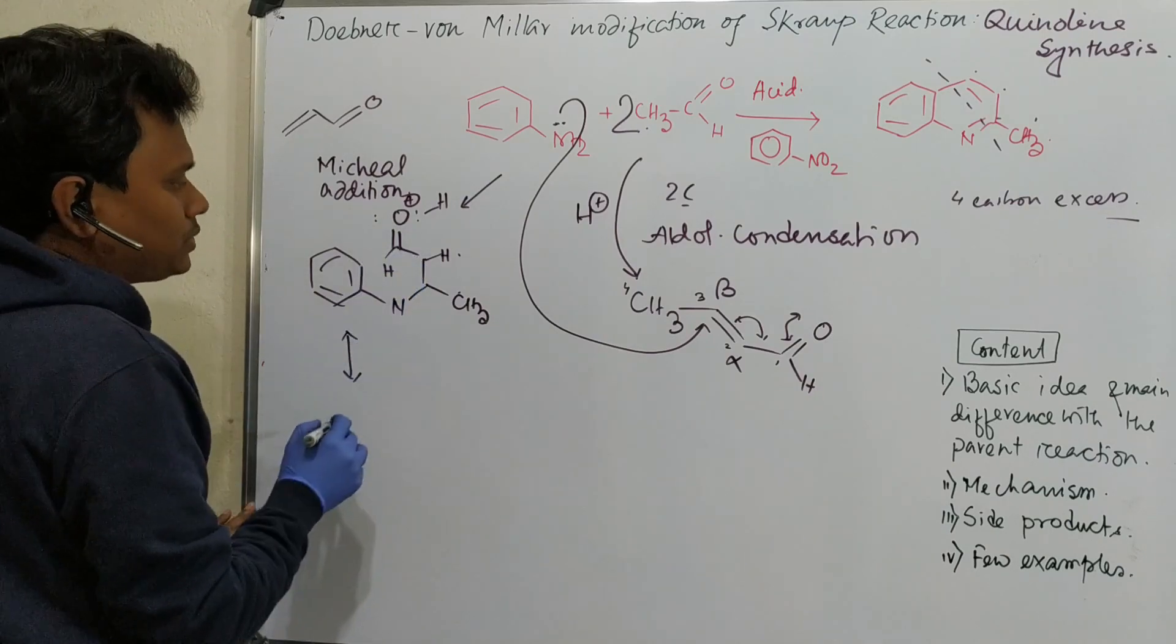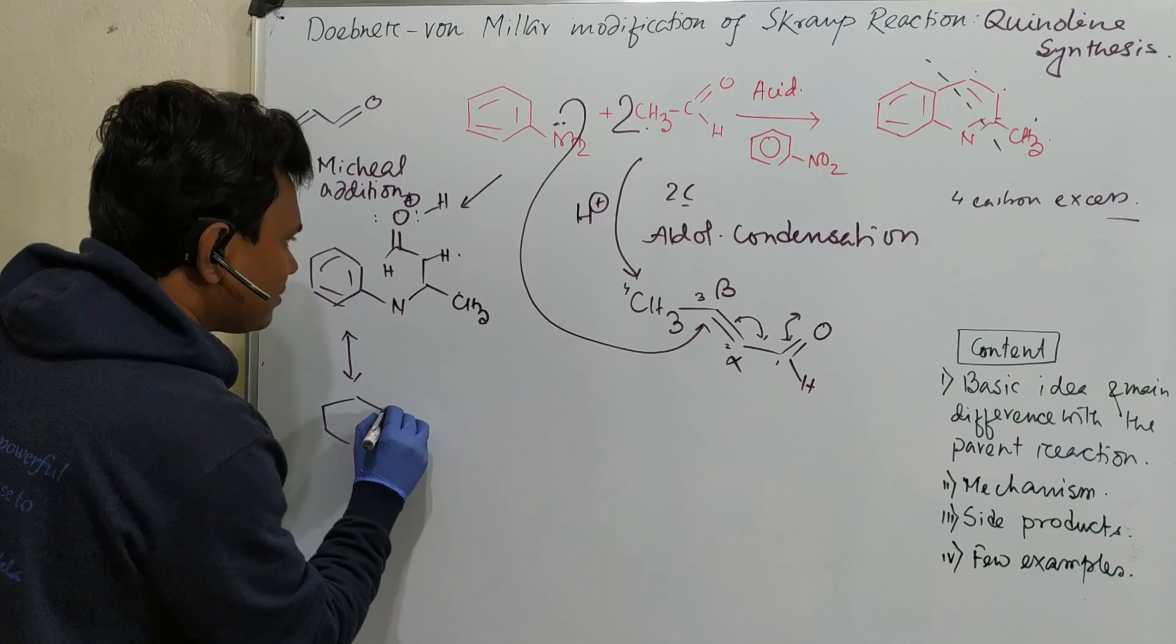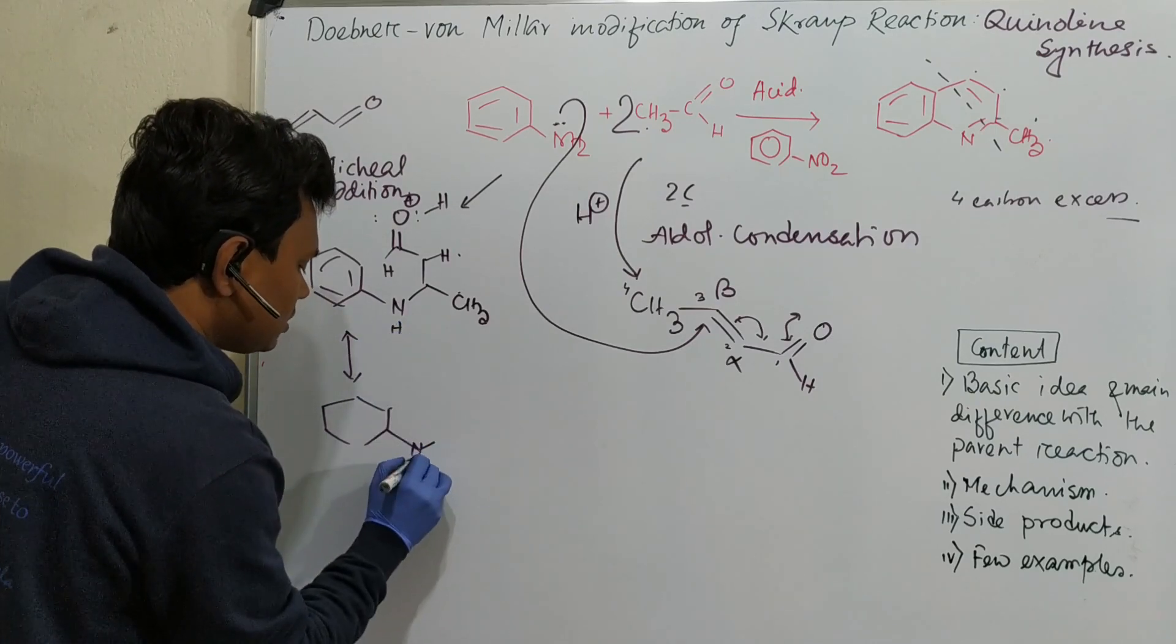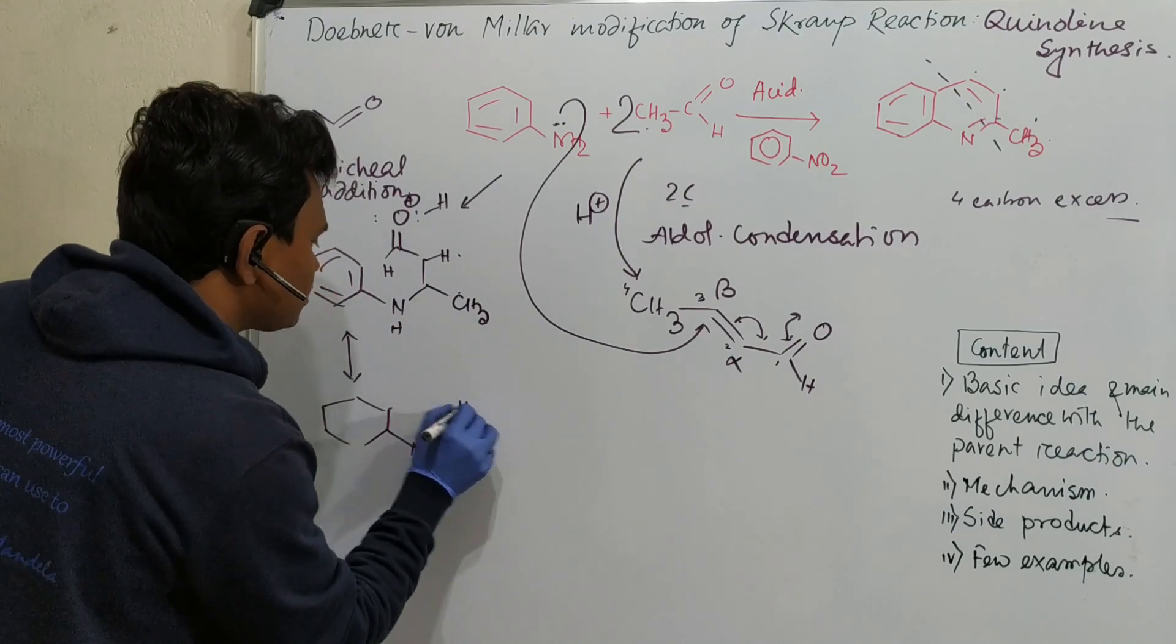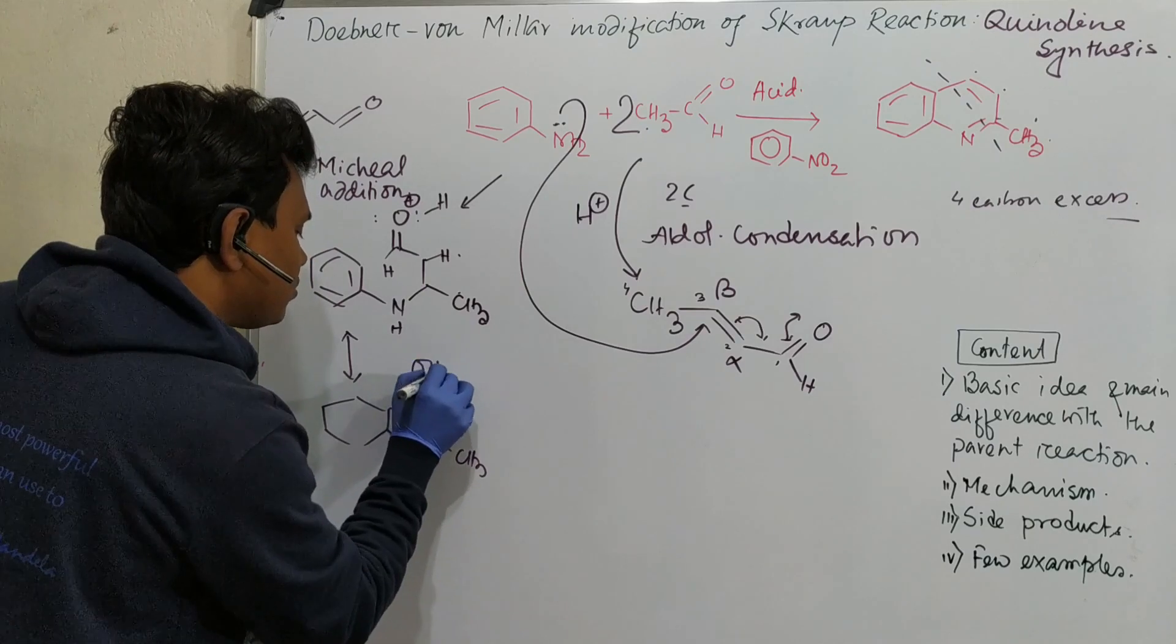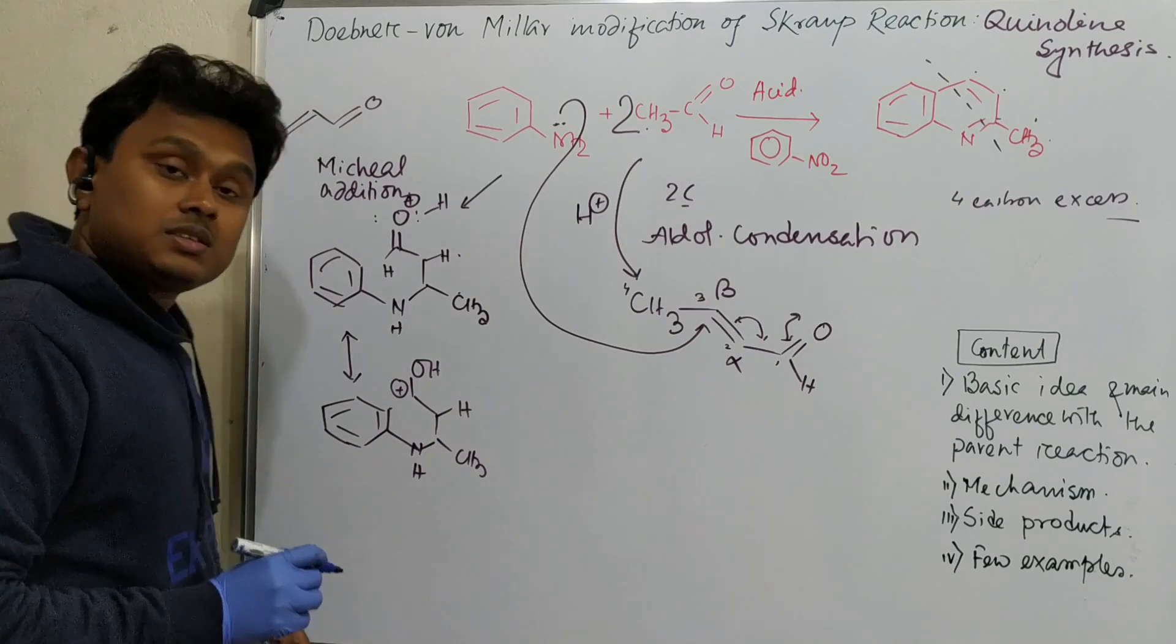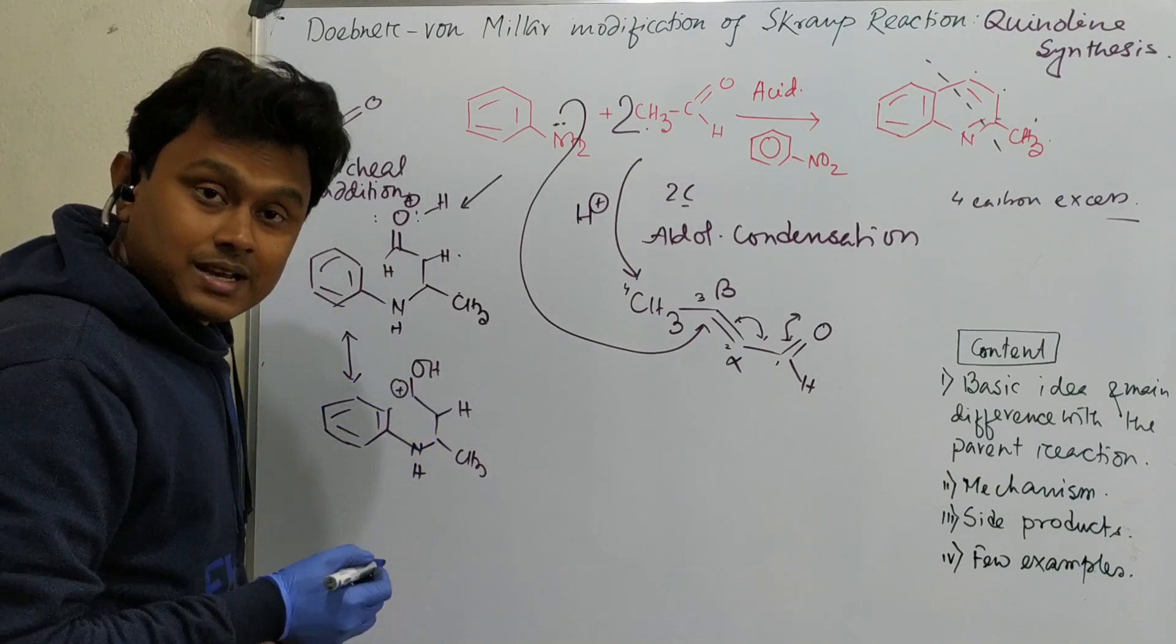In presence of proton, this part gets protonated. Because acid is there in the medium. Now, if you draw a canonical form, then it has another canonical form, which is NH, this is NH, CH3, H, OH with plus charge here. This is the canonical form. So what does this indicate? That this become an electrophilic center.